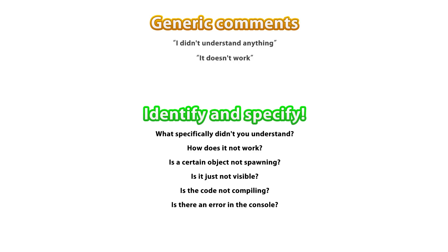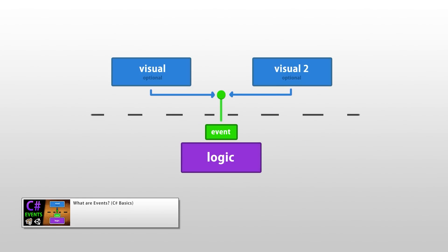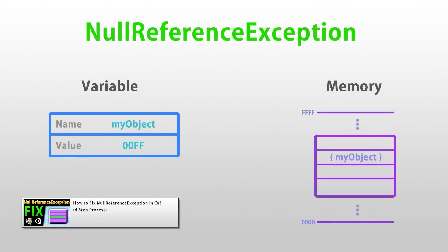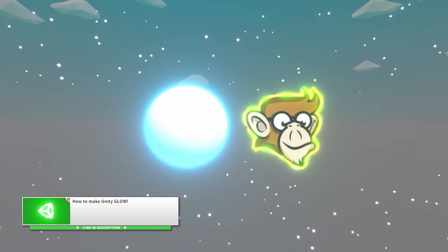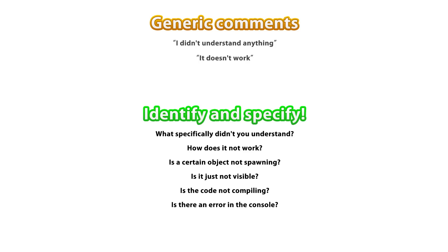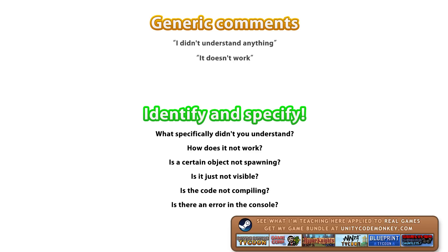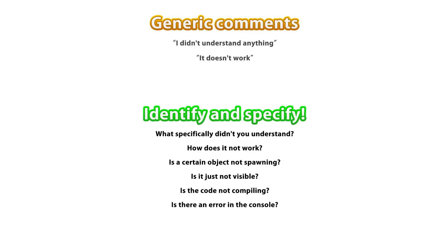The only way to learn is to first identify what it is you're trying to learn. If somebody asks me how C# events work, I can point them to my video and elaborate further. If someone tells me they have a null reference exception, I can tell them my method for finding the culprit using Debug.Log. If an object isn't glowing, I can point them to the glow checklist, and so on. But if someone just says 'it didn't work' or 'I didn't understand anything,' I really don't have enough information to help. Maybe they don't know what a component or game object is, or what a C# delegate or variable is — maybe they understood the code but not the why. My point is: if you've ever watched a video and thought you don't understand anything, stop the video and take some time to identify exactly what you don't understand. If you do that, I guarantee you will learn much, much quicker.